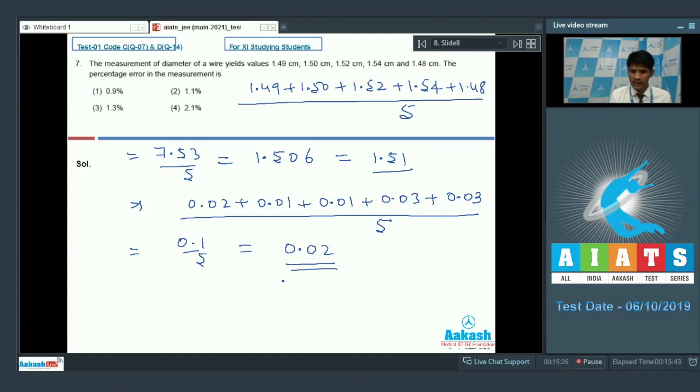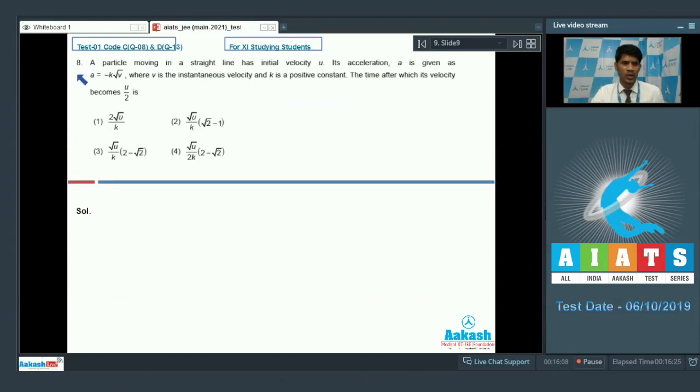So the percentage error that we shall be calculating here: 0.02 divide by 1.51 into 100, that is approximately 1.3%. So we got 1.3% approximately as the percentage error. So for question number 7 our option 3 is the correct answer. Now let's take on to question number 8.